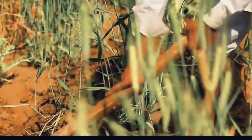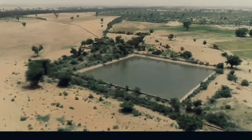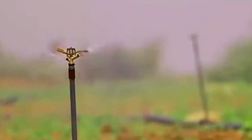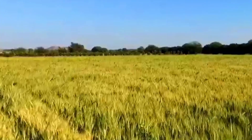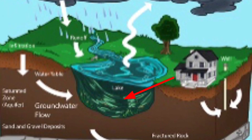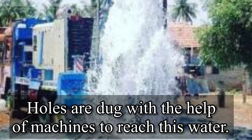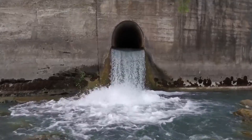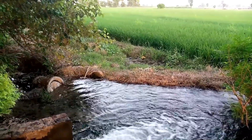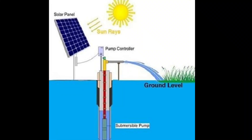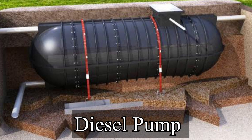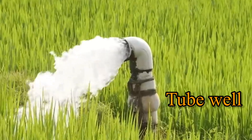Canals are channels that are dug in the ground to take water from the rivers to the fields. In some places, wells are dug to bring underground water to the surface. When underground water is found very deep below the surface, holes are dug with the help of machines to reach this water. Then, tubes are sunk through these holes. The underground water is brought to the surface through these tubes with the help of an electric or diesel pump. This is called a tube well.